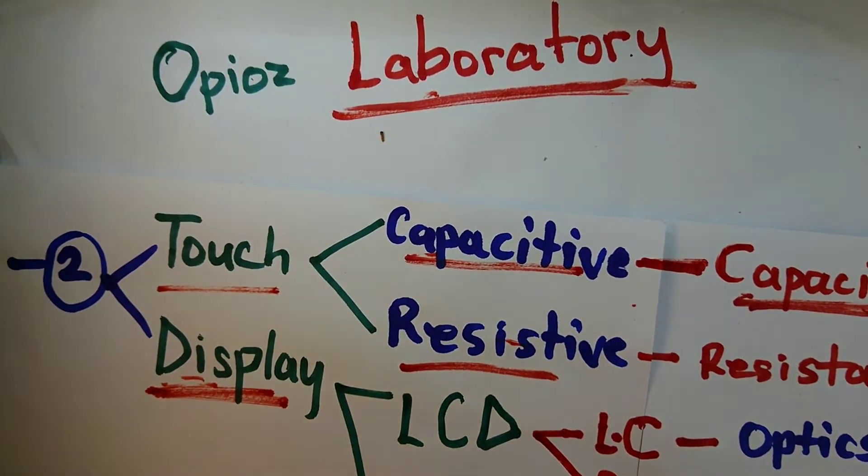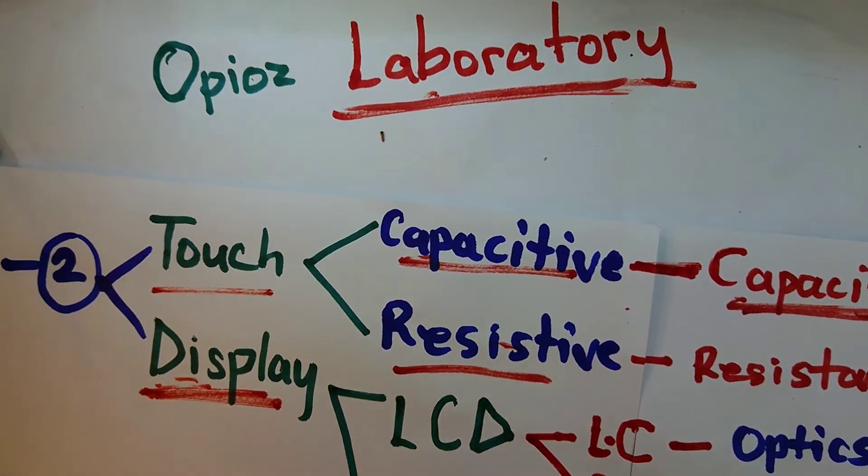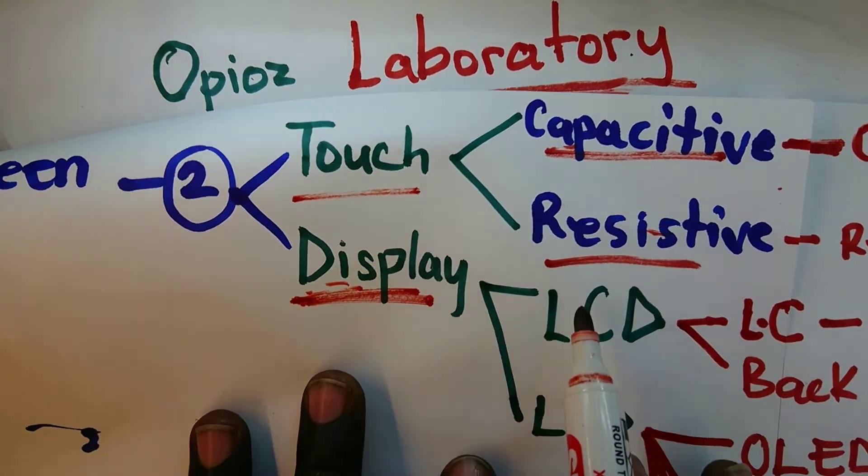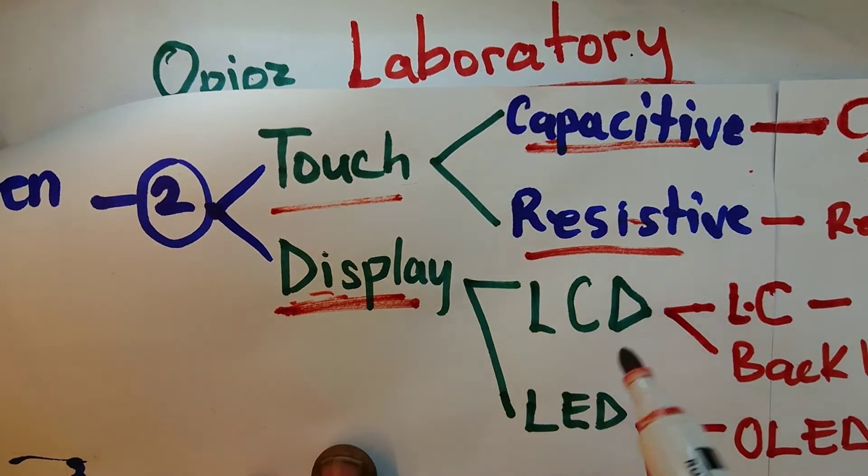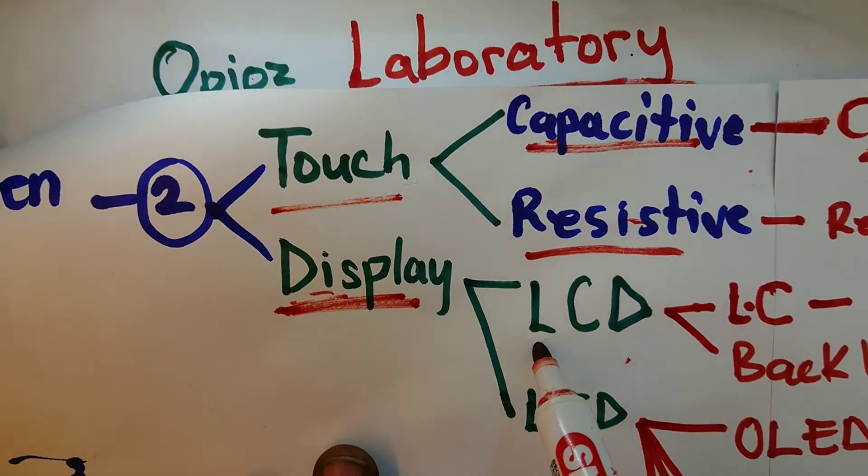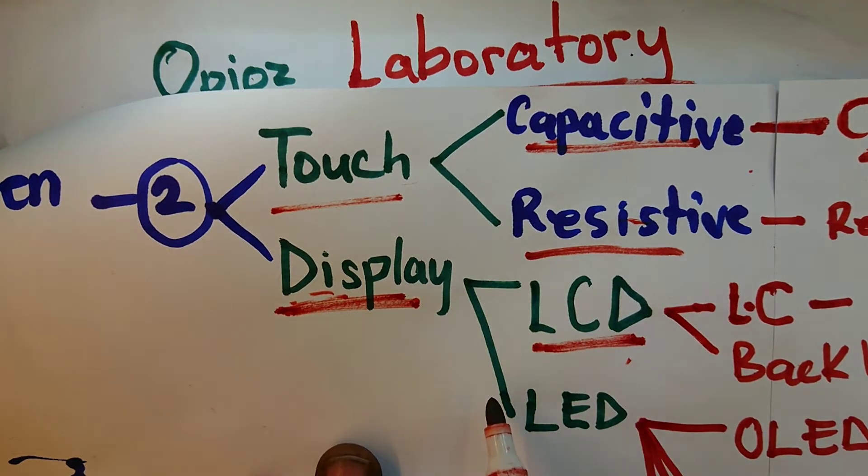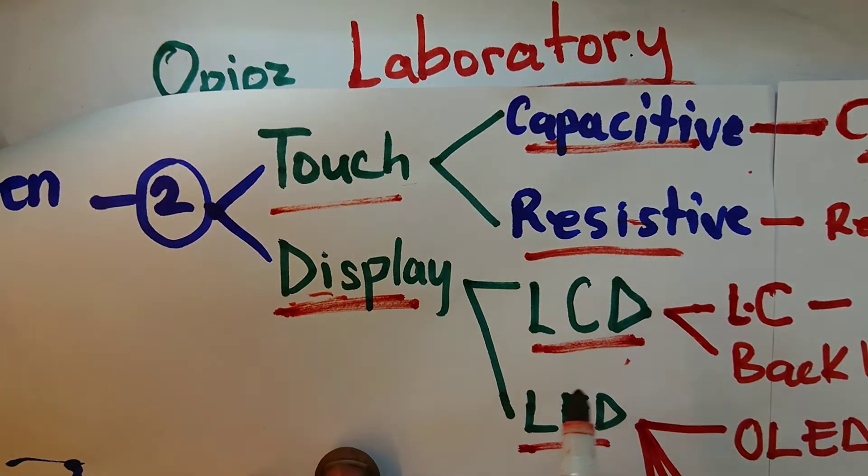Now having said that, I think I should now talk about the display layer. Now the display layer, I'll just talk of two types of display just as I talked of two types of touches. So we have the LCD. LCD is simply abbreviation of liquid crystal display. And then we have the LED that is based on light emitting diode display.